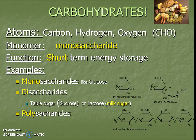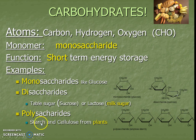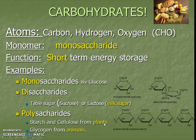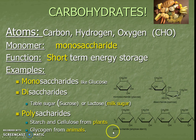Polysaccharide — 'poly' means many, so that's going to be more than three sugars. Some examples are starch, which we find in pasta, potatoes, and bread; cellulose, which makes up the cell wall in plants; and glycogen, which is found in animals when we store short-term energy. We need to be able to recognize the shape, know the examples, functions, and building blocks.